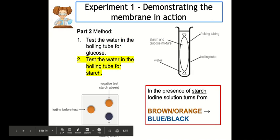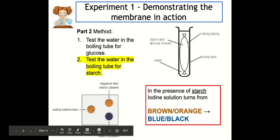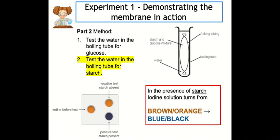Benedict's reagent only works for simple sugars like glucose, so we need a different test for starch. We use iodine solution to test the water for starch. Iodine is normally a browny-orange colour. If it stays that colour when added to the water, it means no starch is present. However, if it turns blue or black, that means the water contains starch, indicating that starch has managed to pass from inside the visking tubing through the membrane into the water.